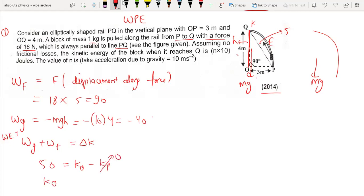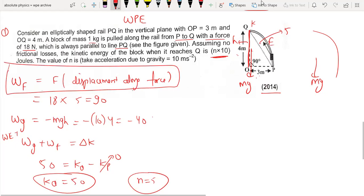Therefore K_Q equals 50 joules. This is an easy question you can do in other ways as well. So this is all about this question, thanks for watching.